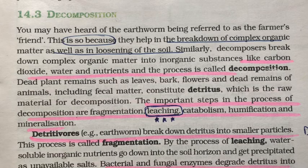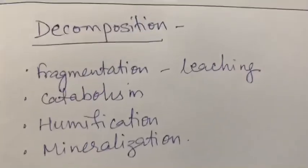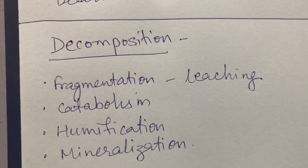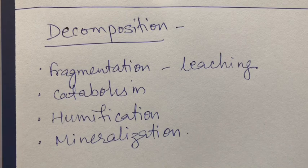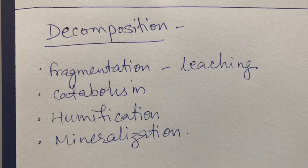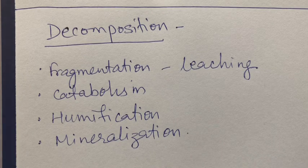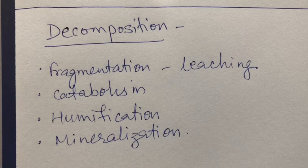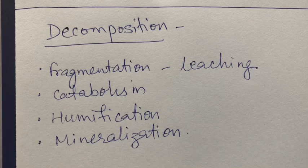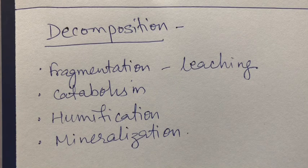The steps of decomposition are: first, fragmentation — the breakdown of detritus into smaller particles. Then leaching, where water carries soluble substances down into the soil, where they get precipitated as unavailable salts. Bacterial and fungal enzymes then break these down into inorganic substances in a process called catabolism. Next is humification.